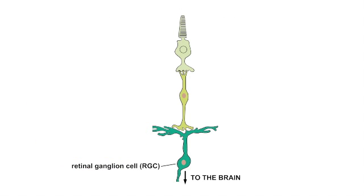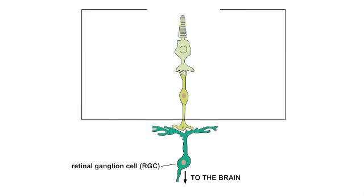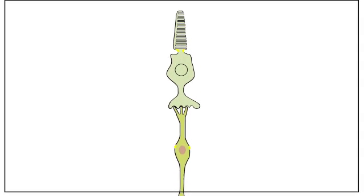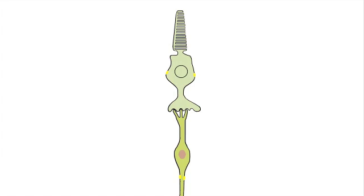The receptive fields of RGCs are established by signaling in upstream retinal circuits. There are two types of bipolar cells that signal to RGCs: on and off. Off-bipolar cells preserve the sign of the cone and are therefore hyperpolarized by light. On-bipolar cells reverse the sign of the cone and are depolarized by light.